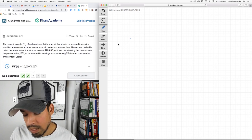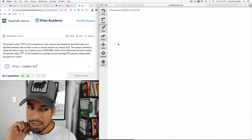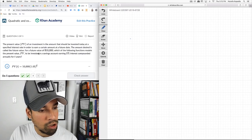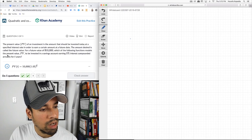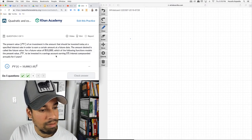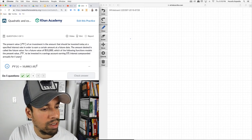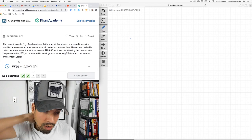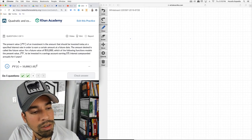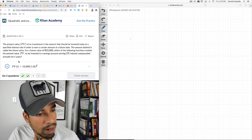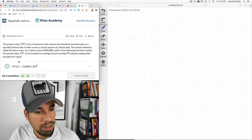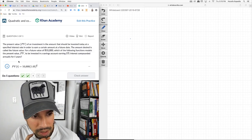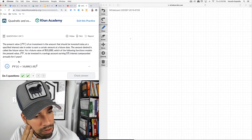The present value of an investment is the amount that should be invested today at a specified interest rate in order to earn a certain amount at a future date. The amount desired is called future value. For a future value of 10,000, which of the following functions models the present value PV to be invested in a savings account earning 5% compounded annually for T years?